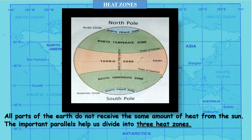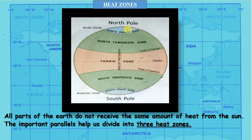Some parts of the earth receive more heat than other parts because of the variation in the angle of the rays of the sun. Depending on the heat received, the zones are named differently. The important parallels — tropic of cancer, arctic circle, equator, tropic of capricorn, and antarctic circle — help us divide the earth into three heat zones: the torrid zone, the temperate zone, and the frigid zone.